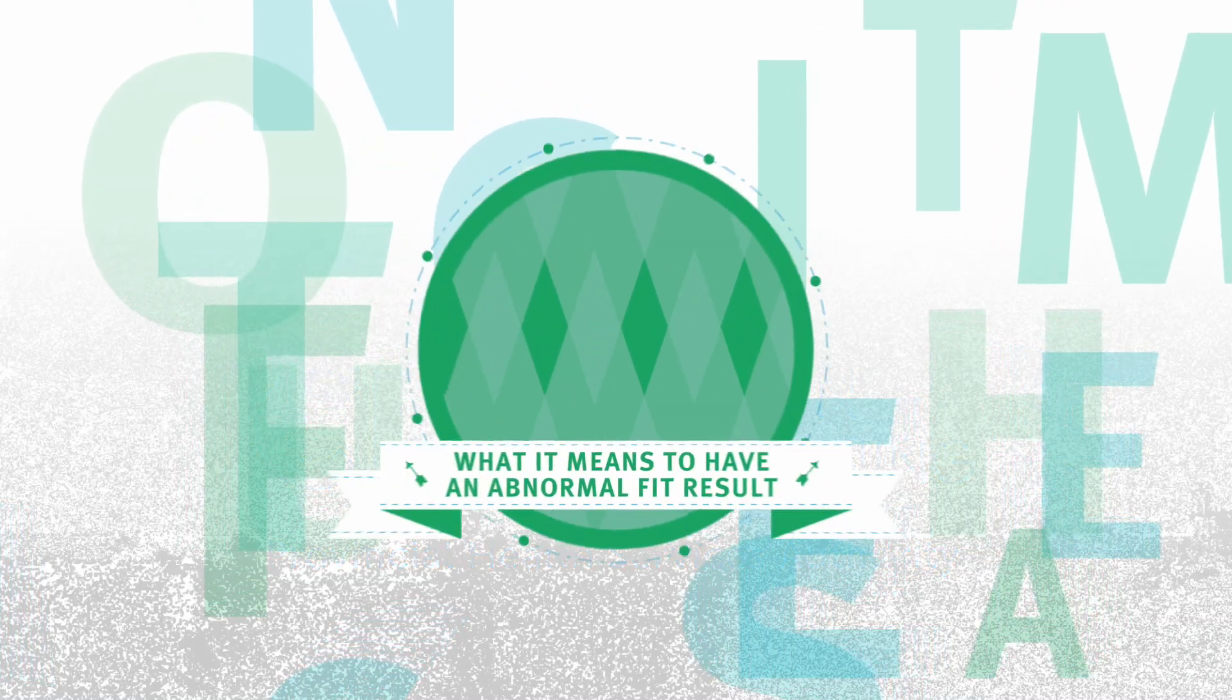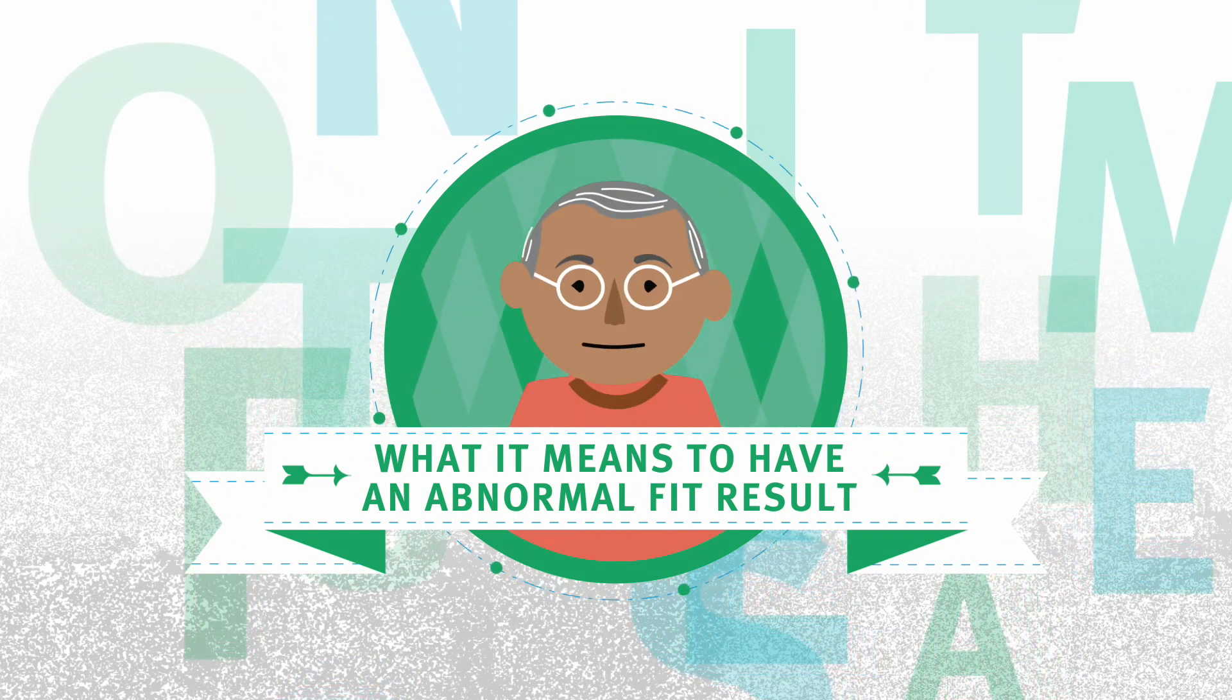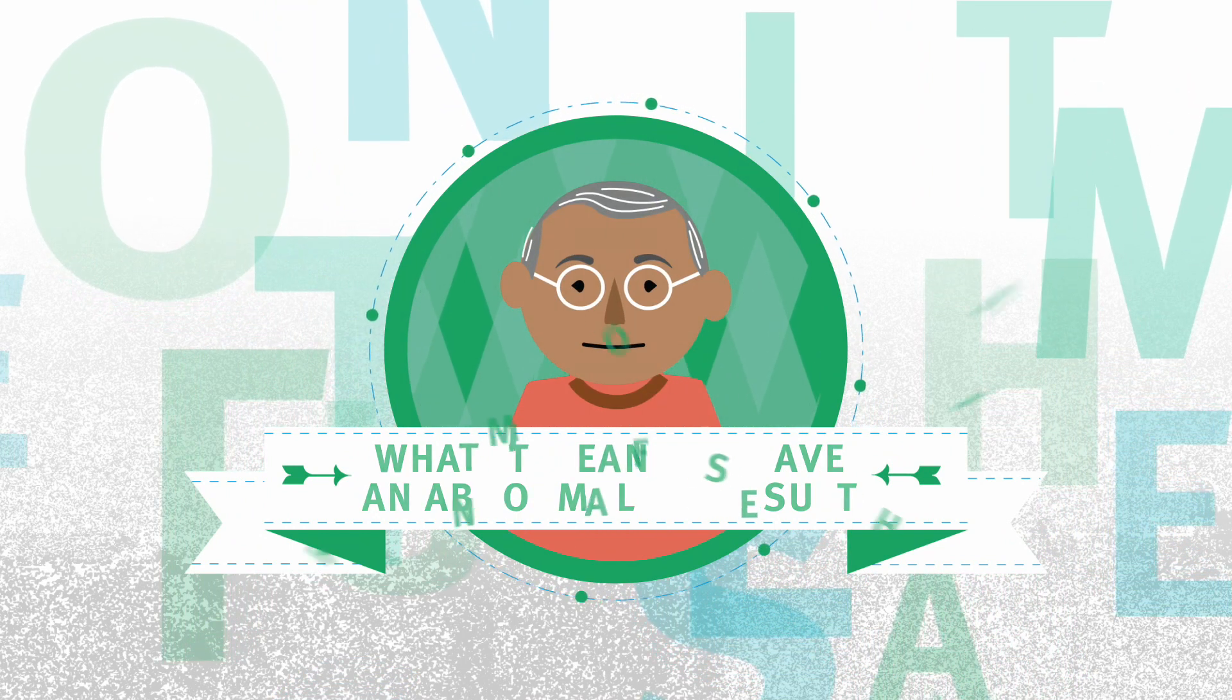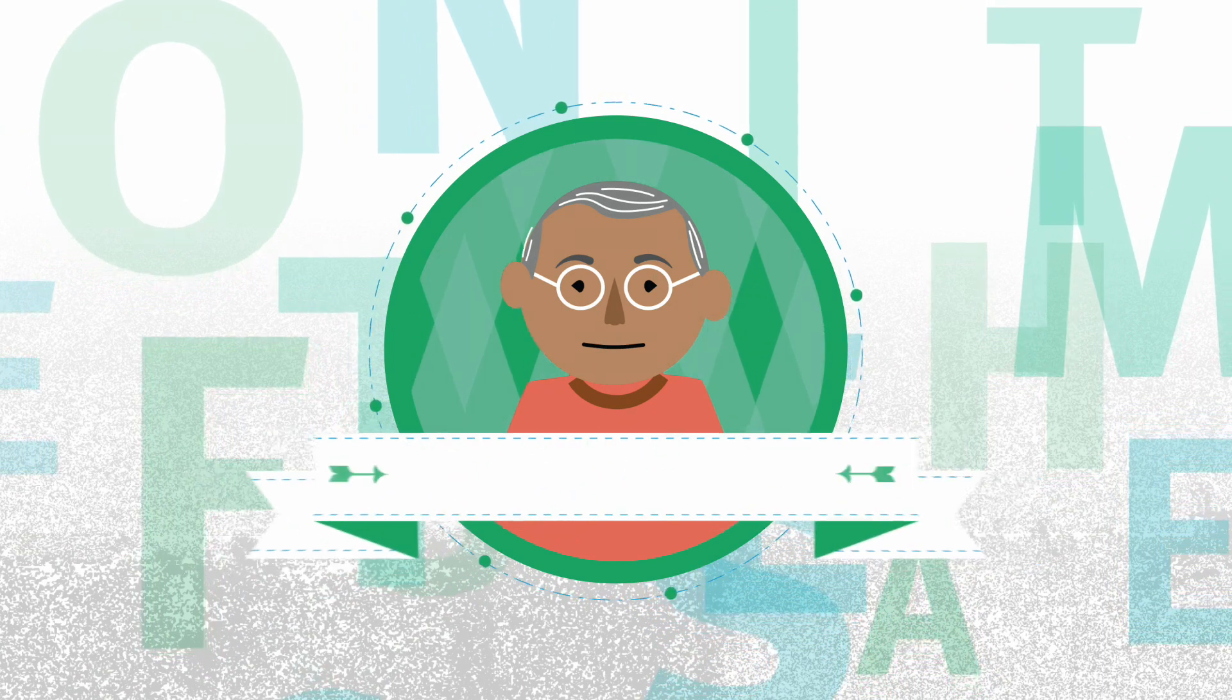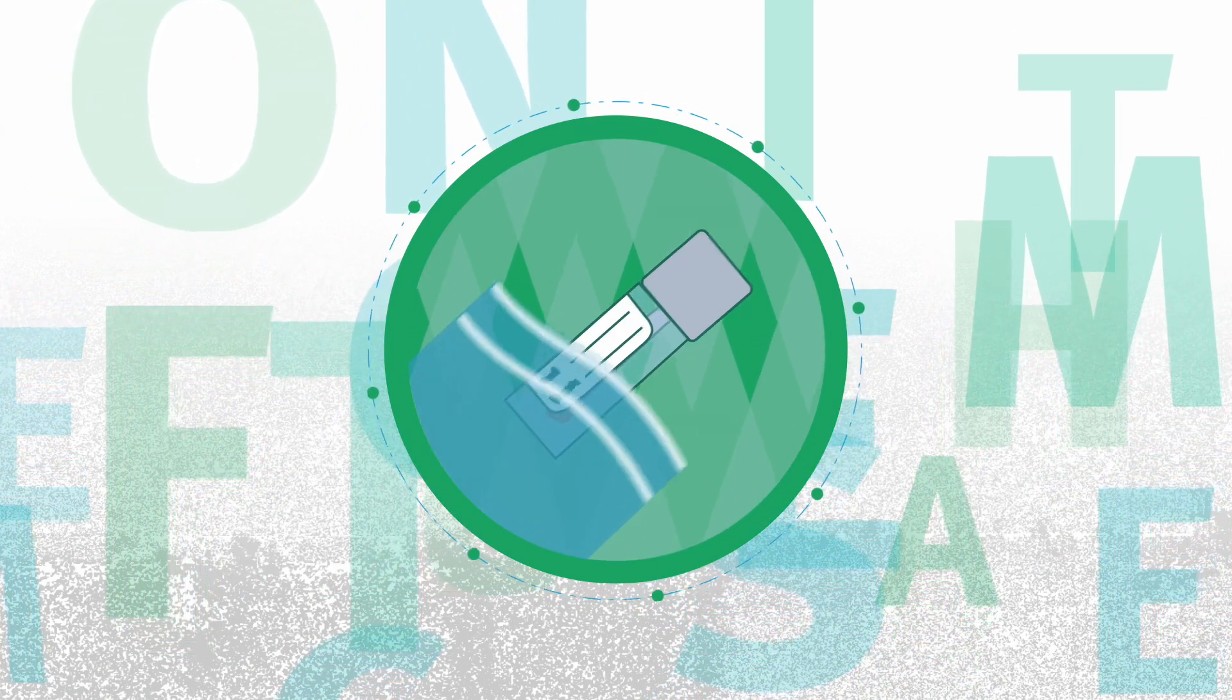What it means to have an abnormal FIT result. A fecal immunochemical test, otherwise known as a FIT, is a screening test used to detect blood in the stool. An abnormal FIT result means blood was found in your stool.